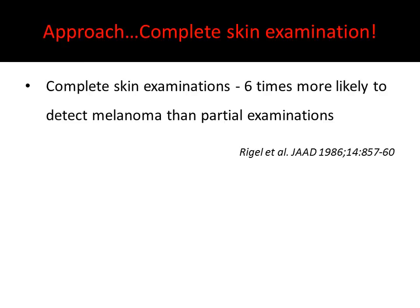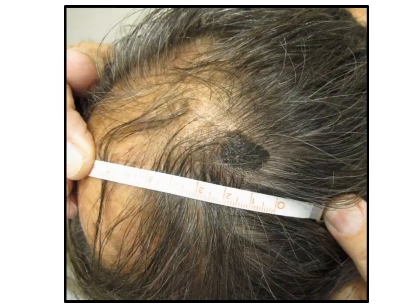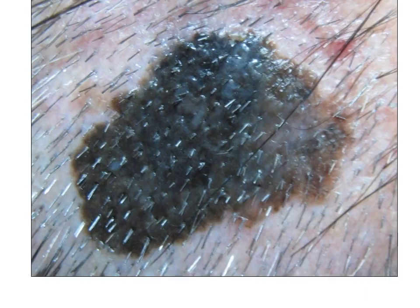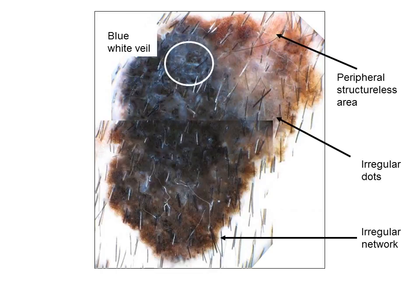So the approach is to perform a complete skin examination from head to toe. Scalp melanomas are notorious for being diagnosed at a later stage; hence we need to look closely even at the scalp. When we shave off the hair, this becomes a doorway melanoma — asymmetry of colors, large, an asymmetry of silhouette, with dermoscopy showing multiple criteria for melanoma. It is 0.9 mm in thickness.